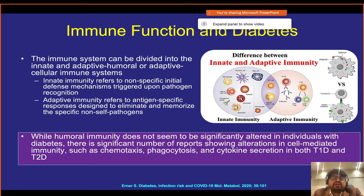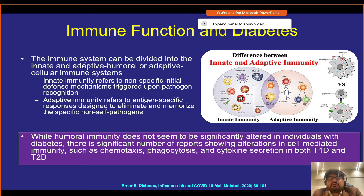Humoral immunity does not appear to be significantly affected in diabetic individuals. However, there is definite alteration in cell-mediated immunity, including chemotaxis, phagocytosis, and cytokine secretion in both type 1 and type 2 diabetes. Essentially, the innate immunity and cellular adaptive immunity are affected, while humoral immunity — antibody development against antigens — remains generally intact, so diabetic individuals continue to mount an antibody response.